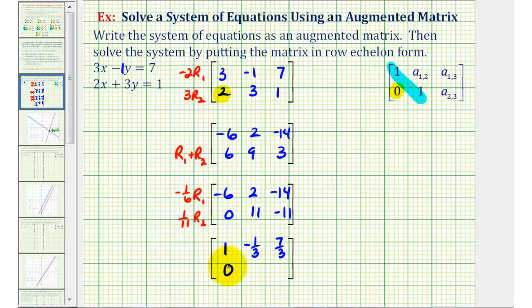For row two, we would have zero. Then one-eleventh times eleven is one. One-eleventh times negative eleven is negative one. Now we have our augmented matrix in row echelon form.